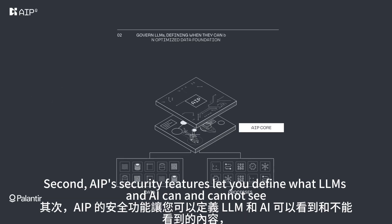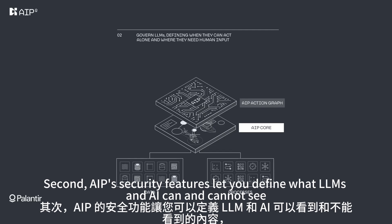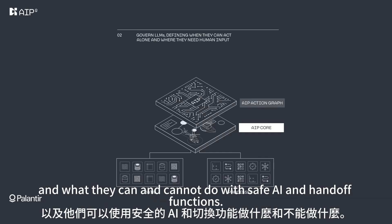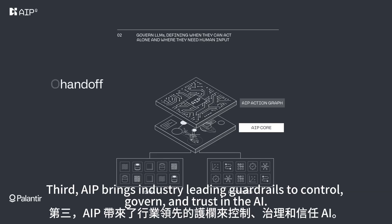Second, AIP's security features let you define what LLMs and AI can and cannot see, and what they can and cannot do, with safe AI and handoff functions.